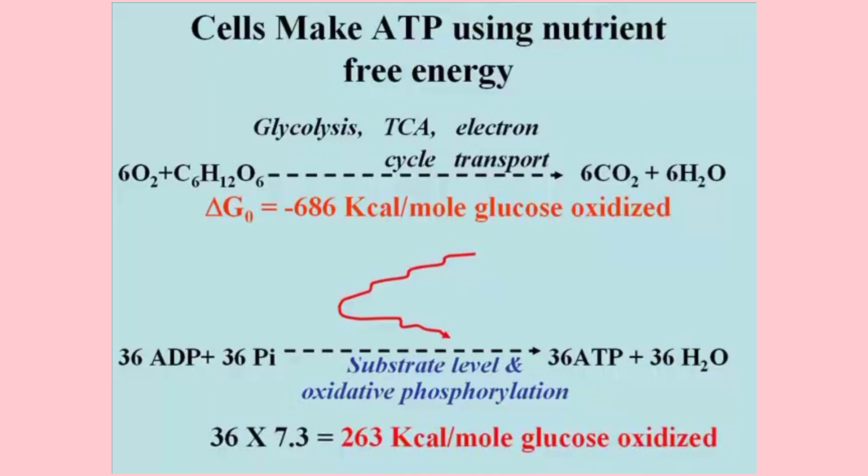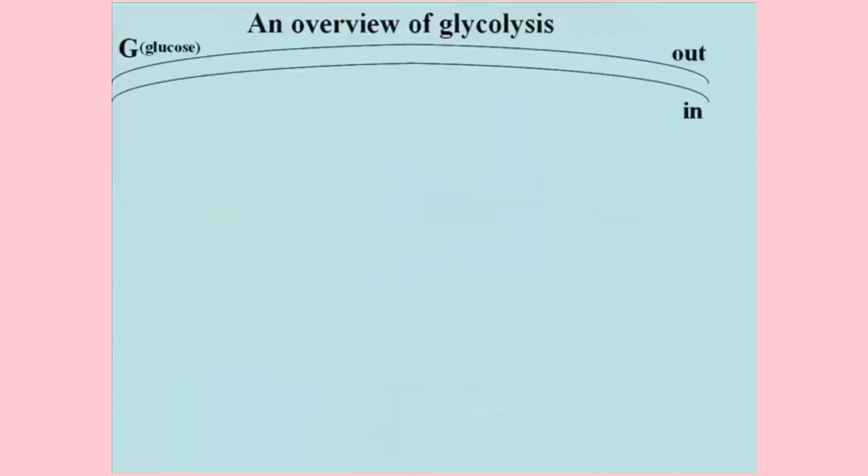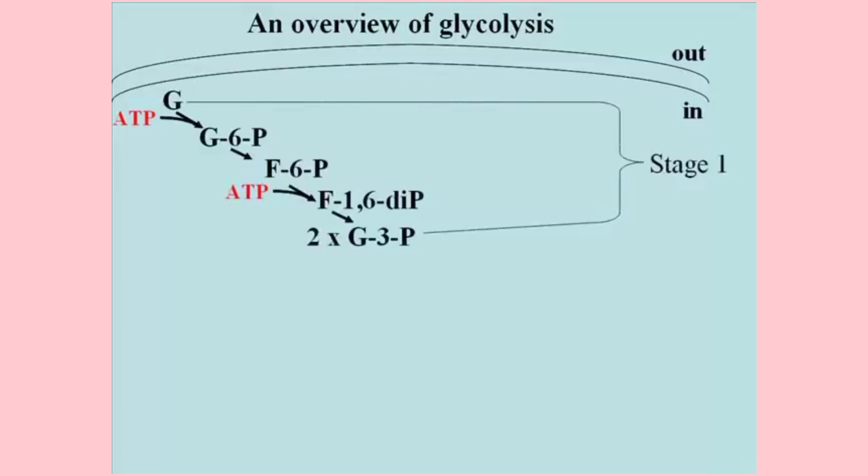Here is an overview of glycolysis. Glucose is delivered to cells where membrane proteins called glucose transporters facilitate their diffusion into the cell. In stage one of glycolysis, glucose is phosphorylated, then isomerized to fructose phosphate, and then phosphorylated a second time to make fructose diphosphate. This is stage one of glycolysis in which two molecules of ATP have been consumed.